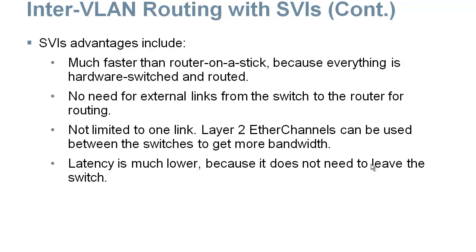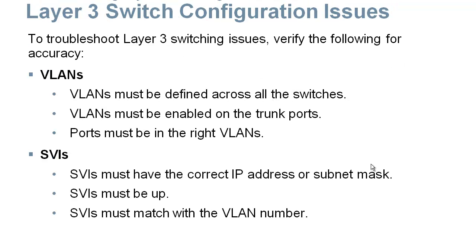The advantages of a multi-layer switch: much faster than router on a stick, everything is hardware-forwarded and routed, no need for external links, and much lower latency. Instead of one switch port sharing bandwidth across four VLANs, each VLAN can have its own physical hardware port for full bandwidth. Configuration checklist: make sure all VLANs are defined on all switches, there's a trunk between connected switches, VLANs are allowed on the trunk, ports are assigned to the right VLAN, and router ports have correct IP addresses and subnet masks. There's a lot of configuration to pay attention to.